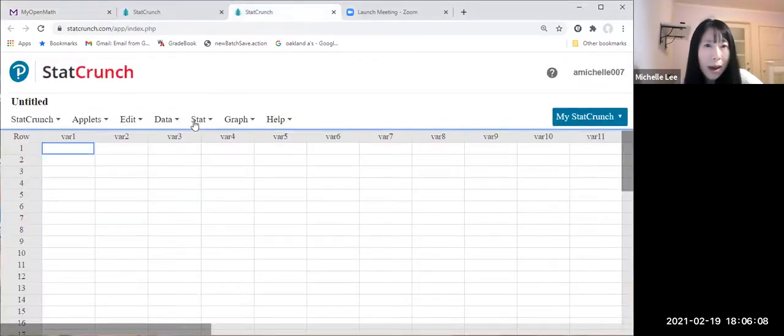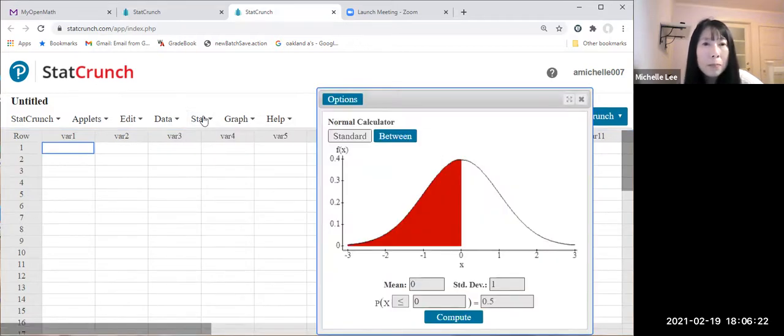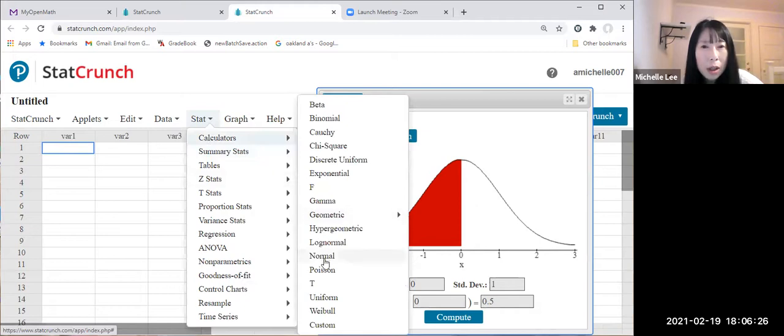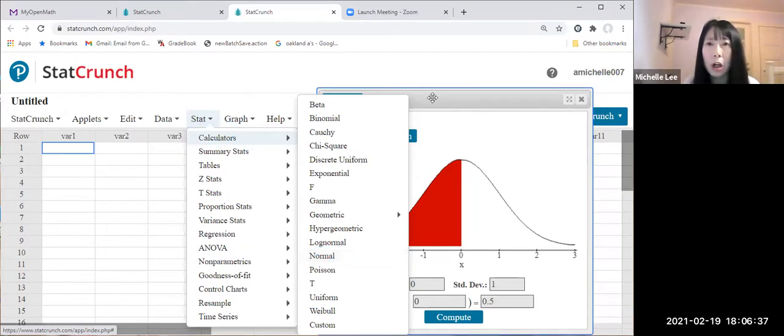So StatCrunch calculator and normal. Where is that? Normal. Okay. So StatCrunch calculator and normal layer. Let us click so we have that there.